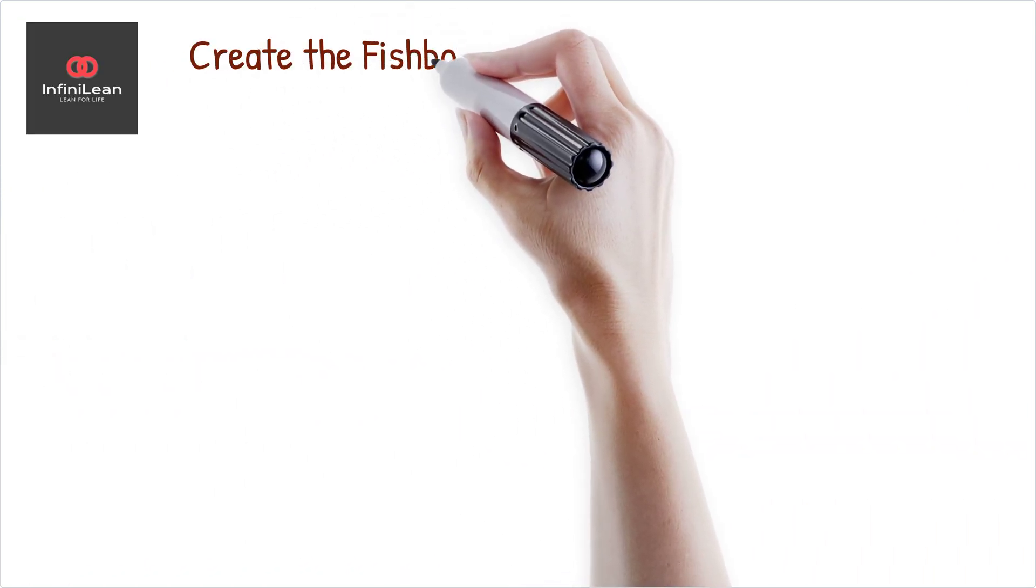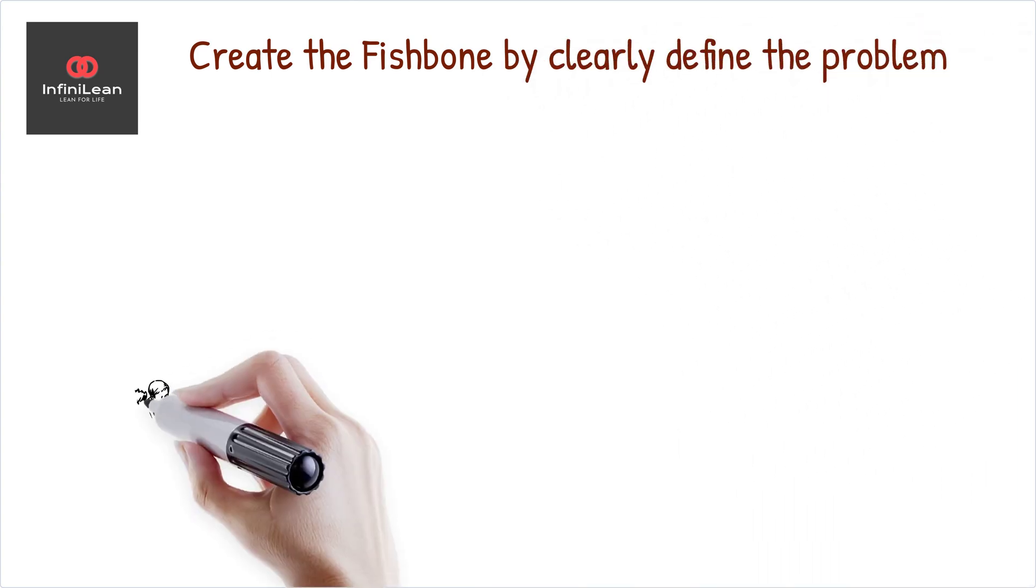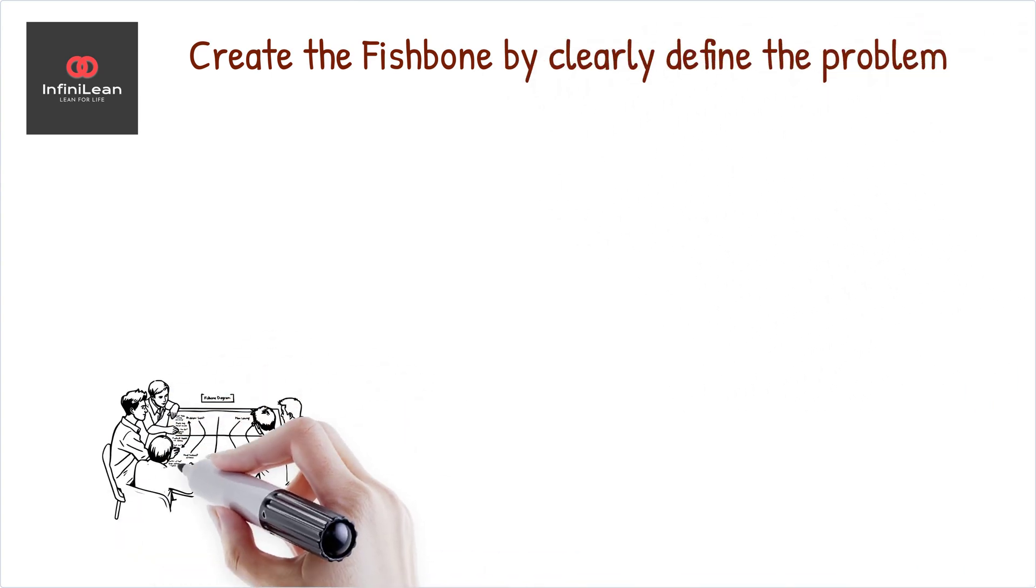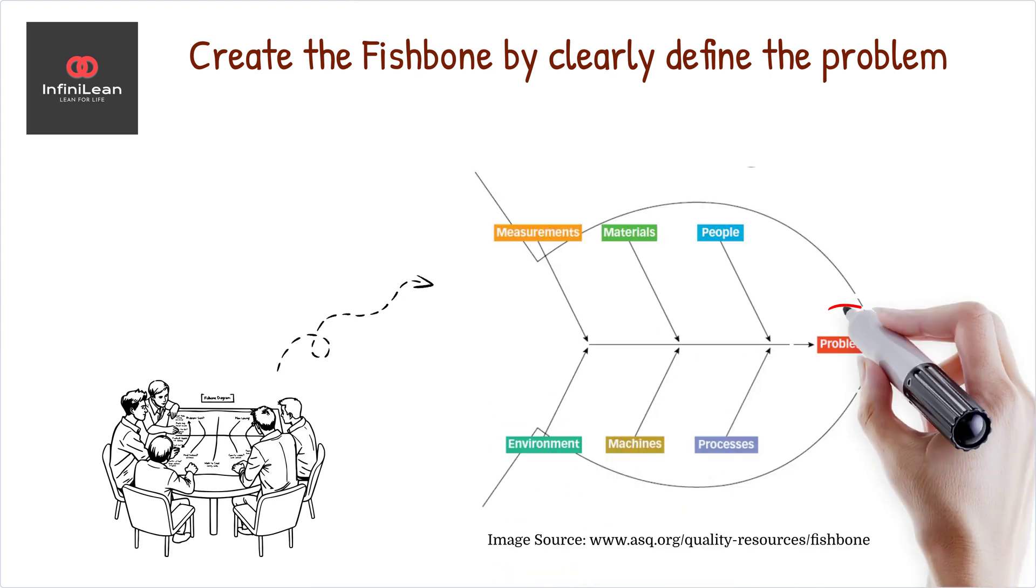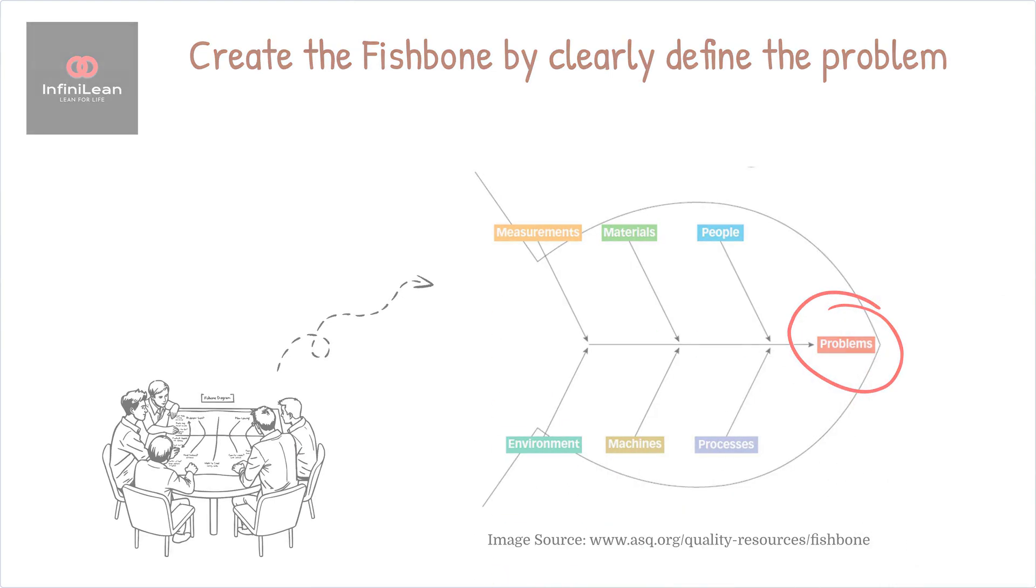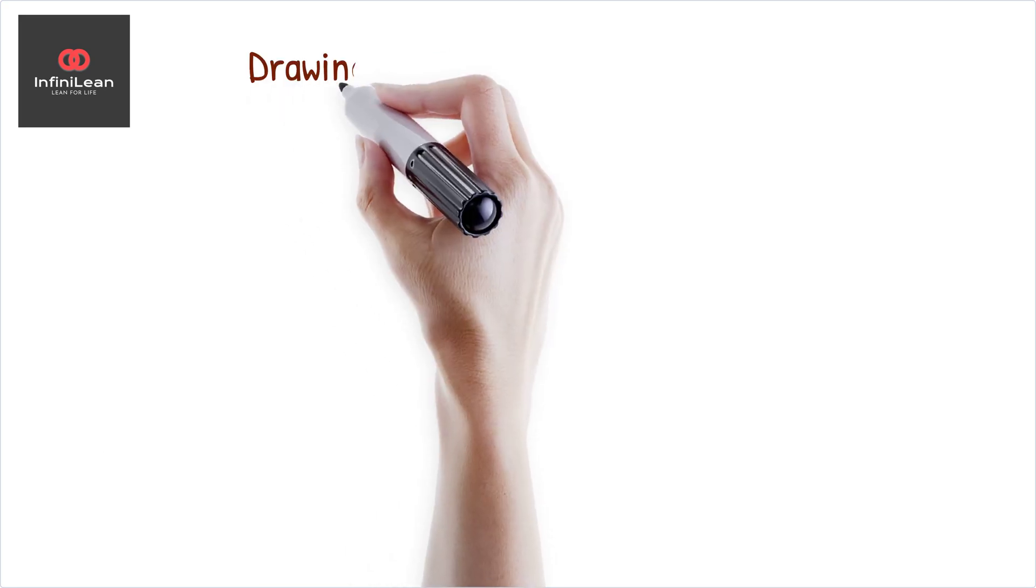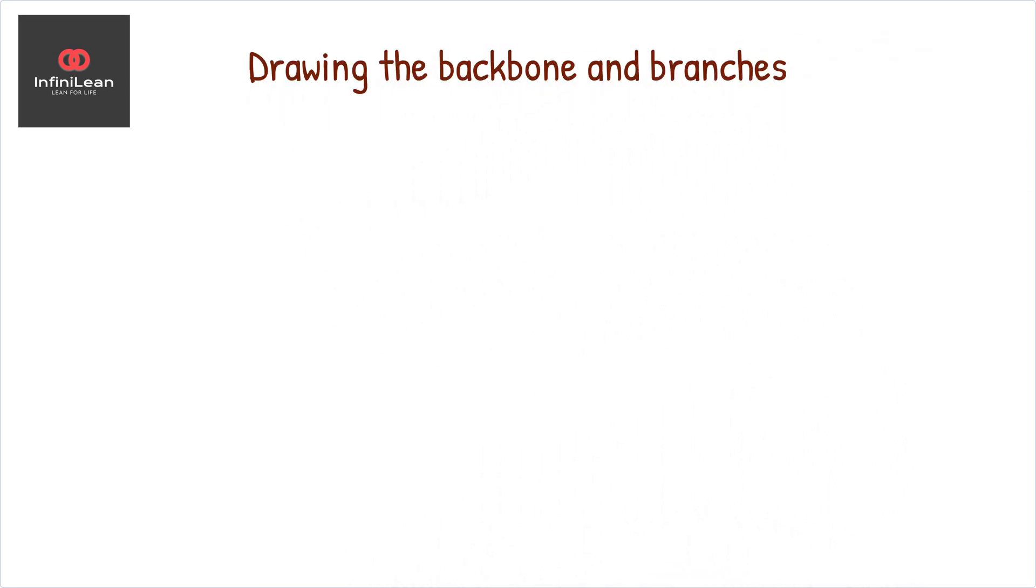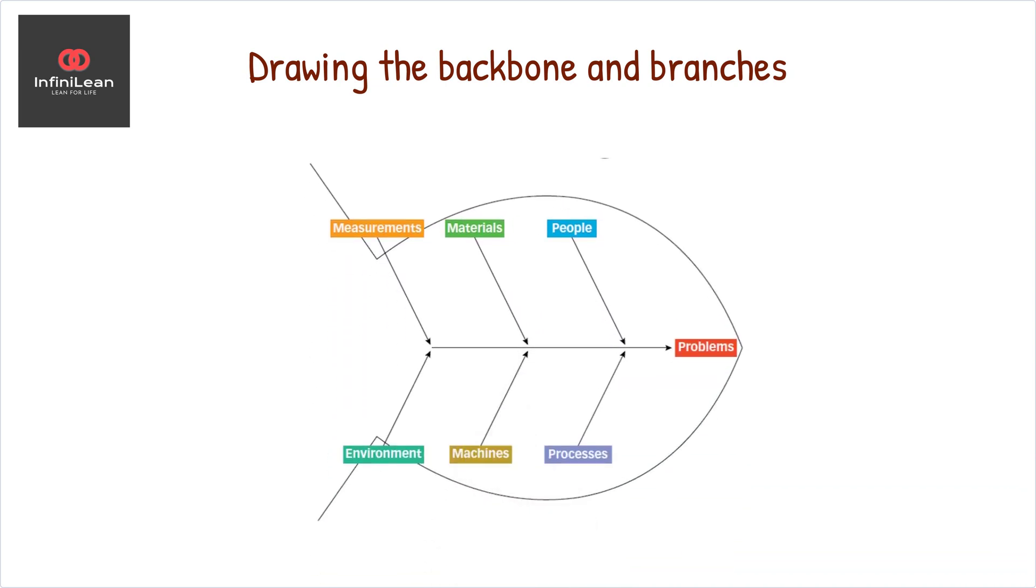Now let's walk through how to create your own Fishbone Diagram. Begin by clearly defining the problem you want to solve. Write it at the head of the fish. Next, draw a straight horizontal line from the problem to represent the backbone. From this line, draw diagonal lines branching out, just like fish bones.